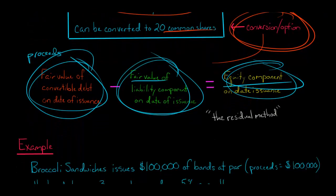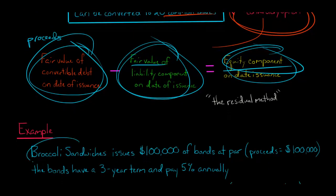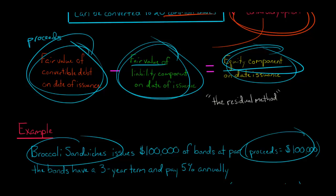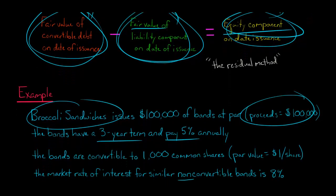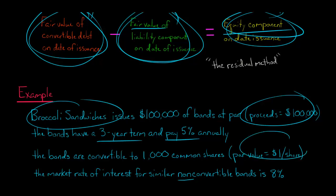Let me give you an example. Let's say we've got a company, Broccoli Sandwiches. They issue $100,000 of bonds at par — the proceeds are $100,000. The bonds are due in three years and they're going to pay interest of 5% annually. The bonds can be converted at any time to 1,000 common shares. The par value is $1 per share.